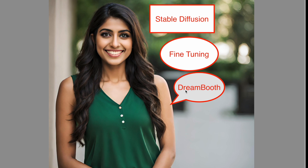Here's how Dreambooth works. Step 1: Data Collection — collect a small set of images of the subject. Step 2: Fine-tuning — the model is fine-tuned using these images. This process adjusts the model weights to capture the unique features of the subject. Step 3: Enhanced Generation — after fine-tuning, the model can generate new images of the subject in various contexts and styles.